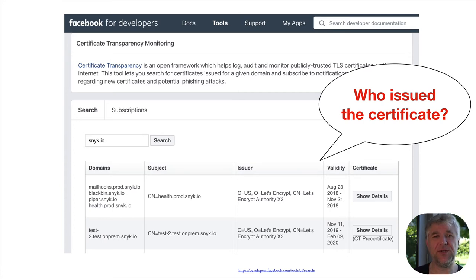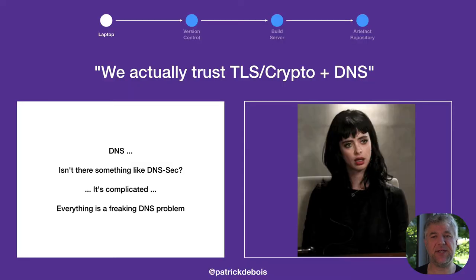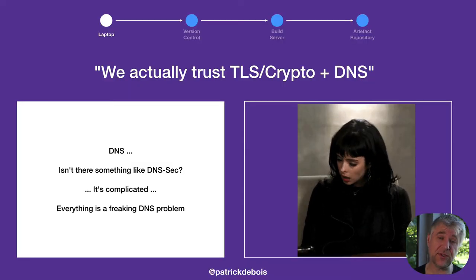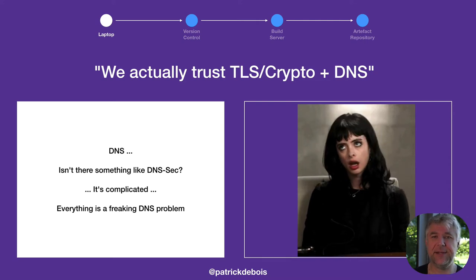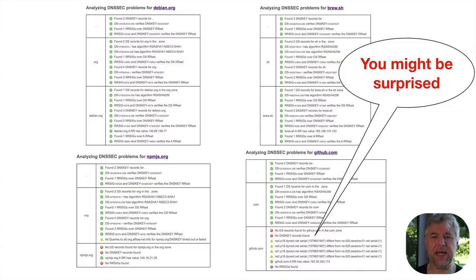Certificate transparency also gives you information if another attacker is requesting certificates for your domain. We can go a step further in DNS — we can set which CAs are allowed via DNS CAA records. Not many do that, but it's a good practice to limit the number of CAs that can generate certificates for you. We're also trusting a lot of DNS, and as my friend says, everything's a DNS problem, and we're not really getting better at it.